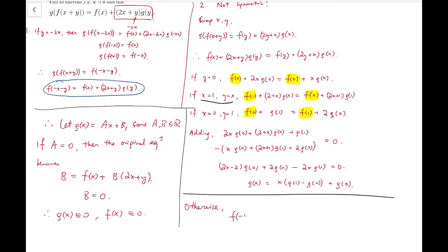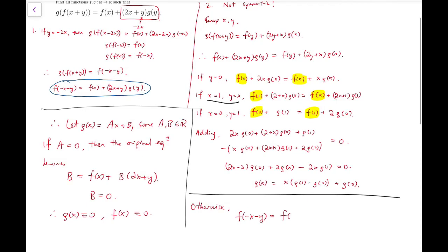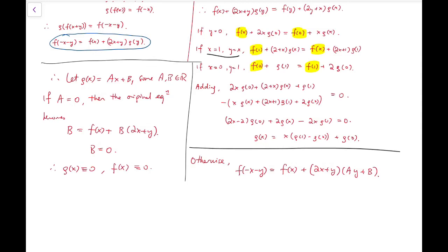If I put g(x) = ax + b into this equation, then f(-x-y) = f(x) + (2x+y)(ay+b). By putting x equals 0, then f(-y) = f(0) + y(ay+b). So I finally managed to express f(y).